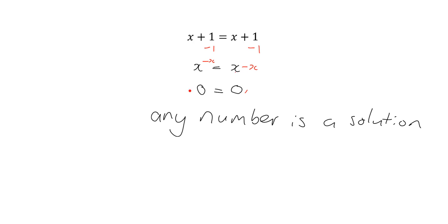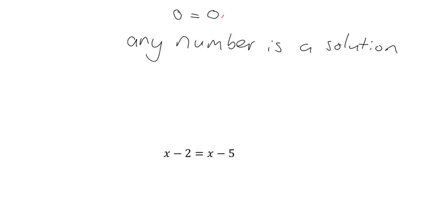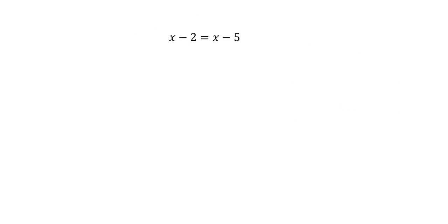If you end up in a funny situation like that, go back and check where you started — possibly you made a mistake. But if you've got a statement like x plus 1 equal to x plus 1, thinking about it for a few seconds you should immediately see that it's always true. Now let's look at another one like this: x minus 2 is equal to x minus 5. Pause and think about what the answer is going to be.